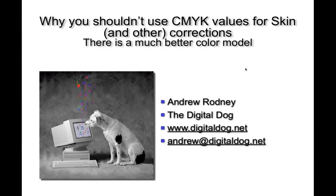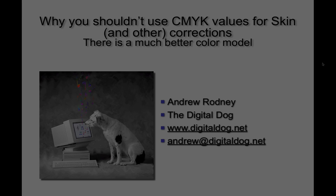In conclusion, if you need to color correct using numeric values, do you want to use CMYK which is based on some print color space? Or maybe LAB, which is much more intuitive, easier to look at and understand? Or perhaps if you're working in Lightroom or Camera Raw, RGB numbers. That's it for today. Hopefully you got something out of the tutorial. Thank you very much.